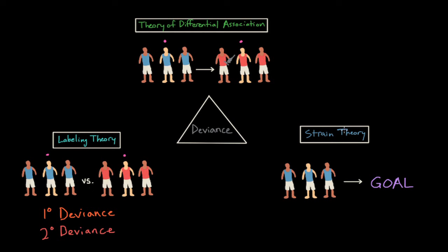Now the last theory of deviance that we'll cover is called strain theory. Strain theory suggests that if a person is blocked from attaining a culturally accepted goal, they become frustrated or strained and turn to deviance. So in this viewpoint, individuals in a group are pushed to attain certain goals, but they may not have the means or legitimate way to achieve success.